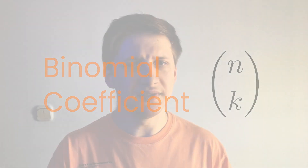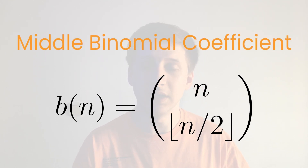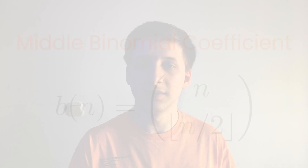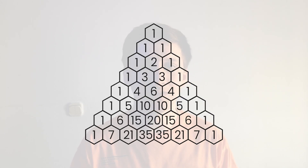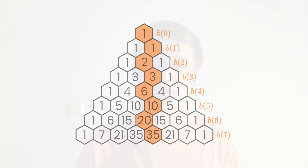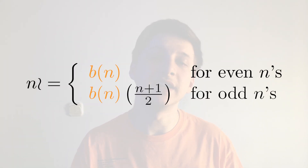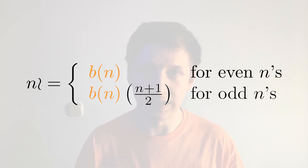To do so, we'll need some help from our old friend the binomial coefficient. If you don't know what a binomial coefficient is, check out this video. Let's denote b(n) as n choose floor of n over 2 — the middle binomial coefficient. It's called 'middle' because when we look at Pascal's triangle, b(n) is always the most centered term in a row. Then, swing factorial of n can be defined as b(n) for even n, and b(n) times (n+1)/2 for odd n. Since the binomial coefficient is always an integer, swing factorial of n is also always an integer.